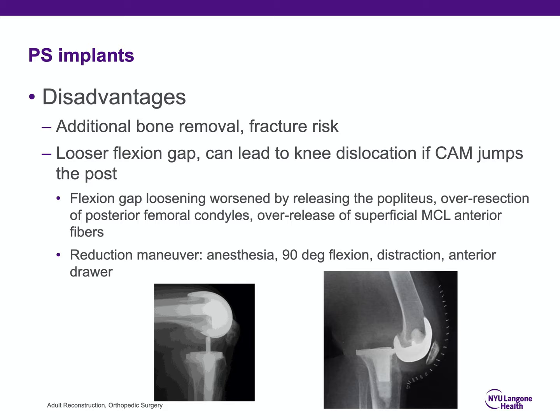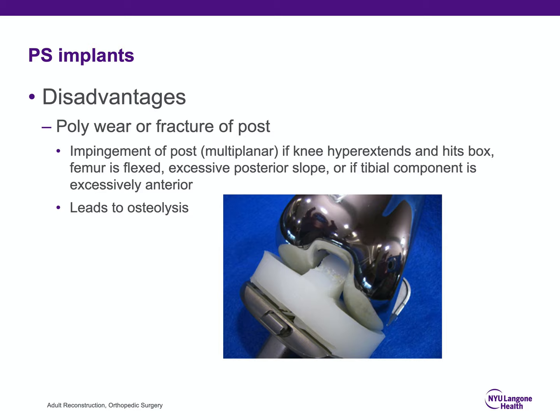If a PS knee dislocates (cam jumps the post), reduce it by giving general anesthesia to relax the patient out of spasm, then bring the knee to 90 degrees of flexion. Additional PS disadvantages include polyethylene wear or fracture on the post — exacerbated when the knee hyperextends, when posterior tibial slope is increased, or when the tibial component is positioned anteriorly, which can lead to osteolysis.